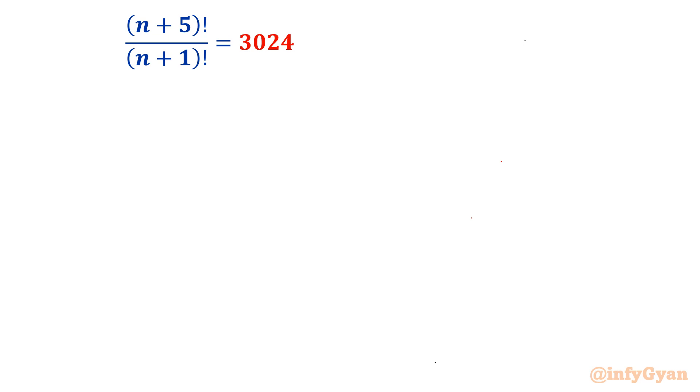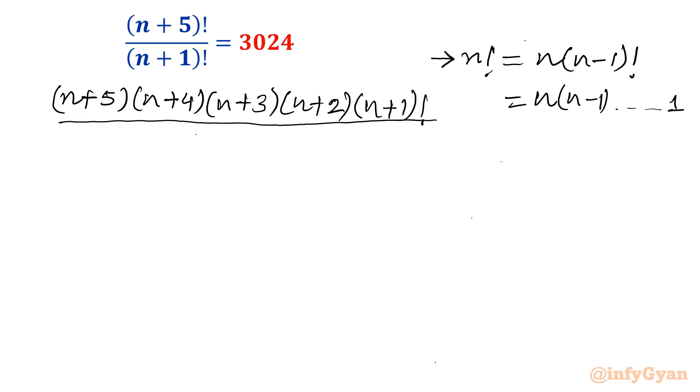I will start by writing the recursive formula for factorial. So n factorial can be written as n times (n-1) factorial, or n(n-1) up to 1. I will use this formula here. I will write (n+5)! as (n+5)(n+4)(n+3)(n+2)(n+1) factorial. So this (n+1)! will cancel and the right-hand side is 3024.